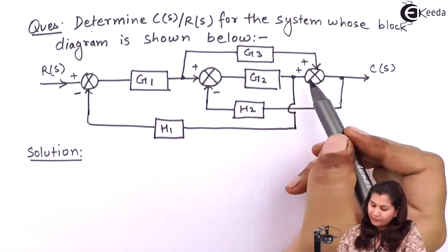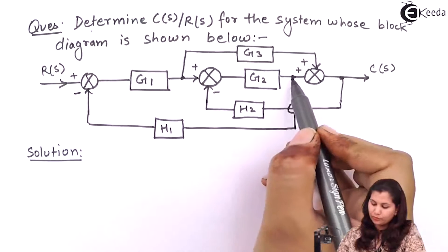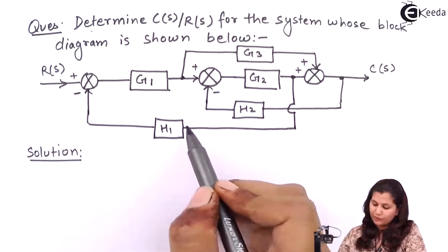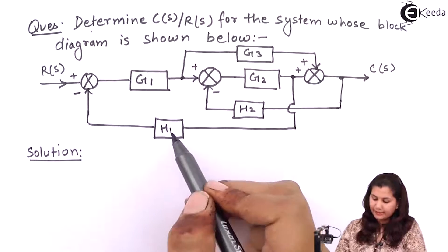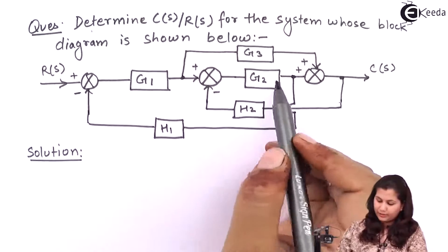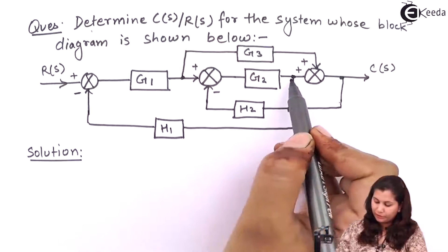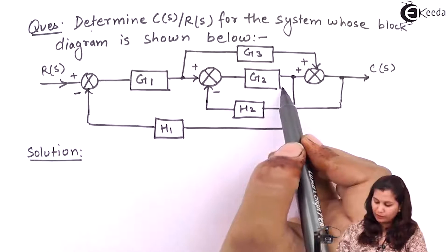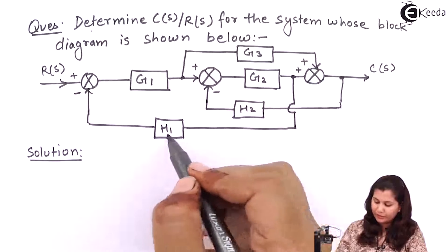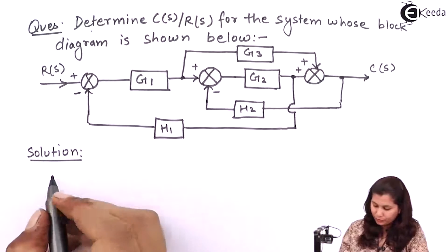So if we move this takeoff point, which is after block G2, to a position which is before this block, we will divide H1 by the transfer function G2. When we move the takeoff point before this block, we will have to multiply H1 with G2. So let's apply this rule.